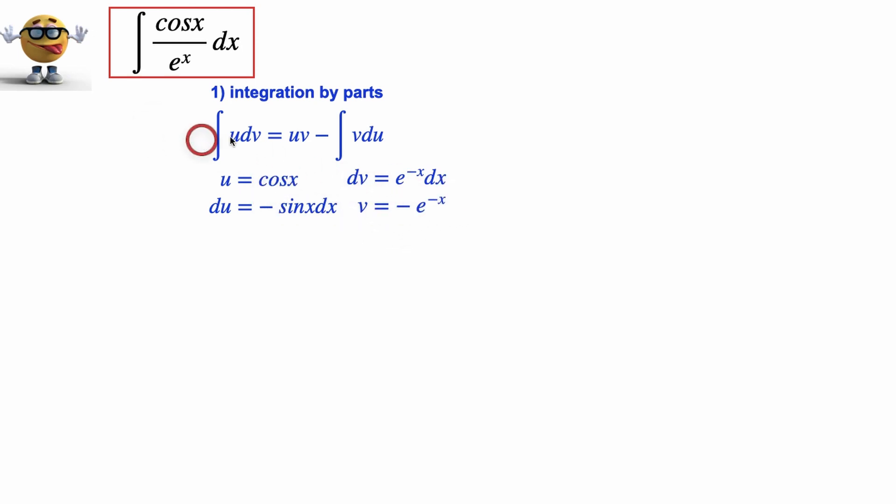So we'll take these and plug them into the integration by parts formula right here to get u times v, so this is u times v right here, minus the integral of v, which is right here, du, and du is negative sin x. This negative I've cancelled with this minus to make it positive right here, and I brought the negative, kept this negative inside here.